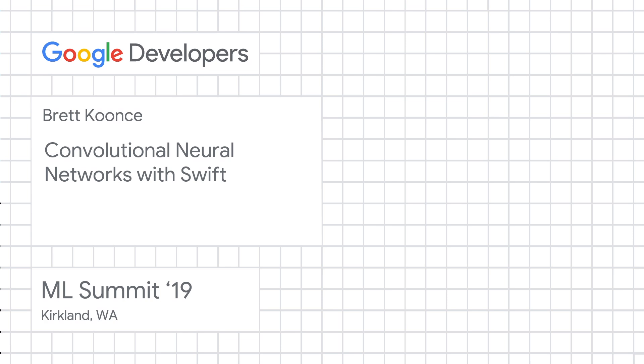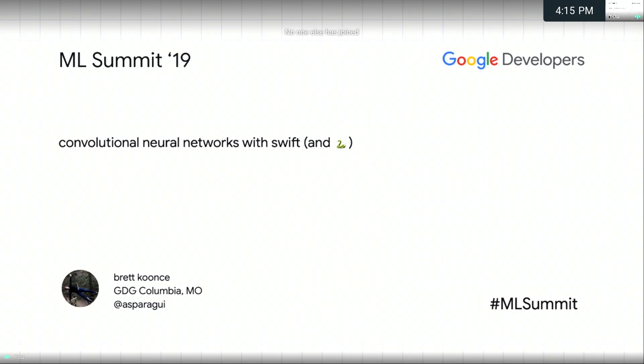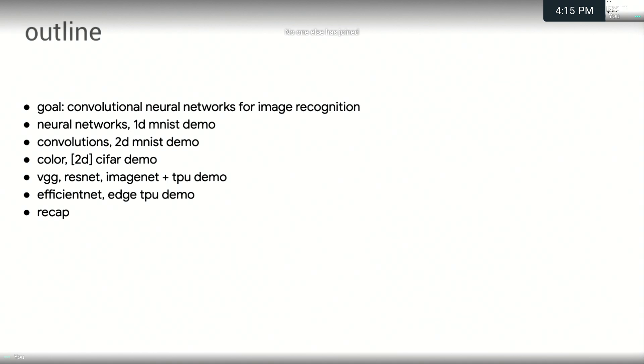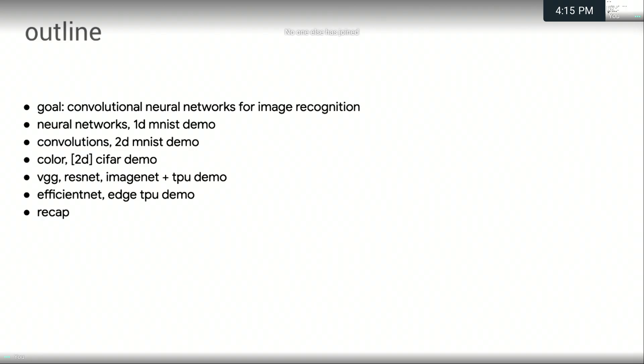Please give a warm welcome to Brett Koontz. Thank you all for coming. Thank Google for having me. Today, we're going to talk about convolutional networks with Swift and a little bit of Python. Very broadly, my goal is to go from basically the beginner level of this subject, convolutional networks for image recognition, to arrive at the current state of the art in this field.